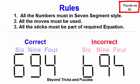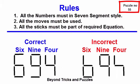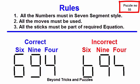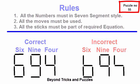Rules: Please note that all numbers must be displayed in seven-segment style. For example, 6, 9, and 4 should be displayed like this and not like this. All the sticks must be part of the equation. All the moves must be used.